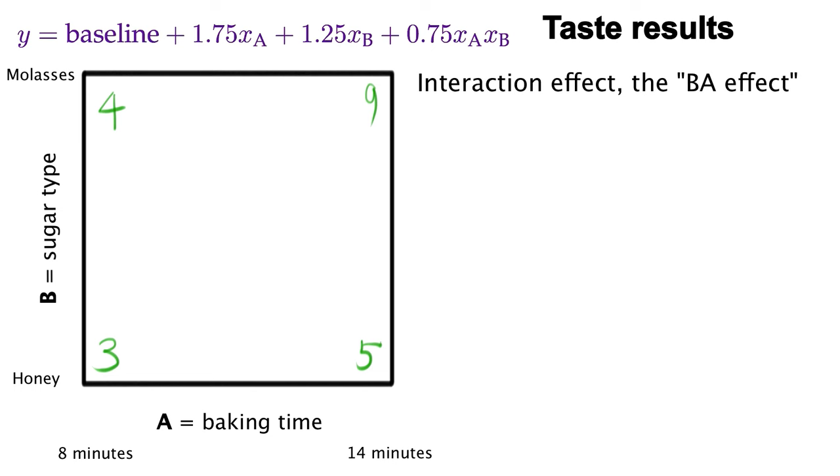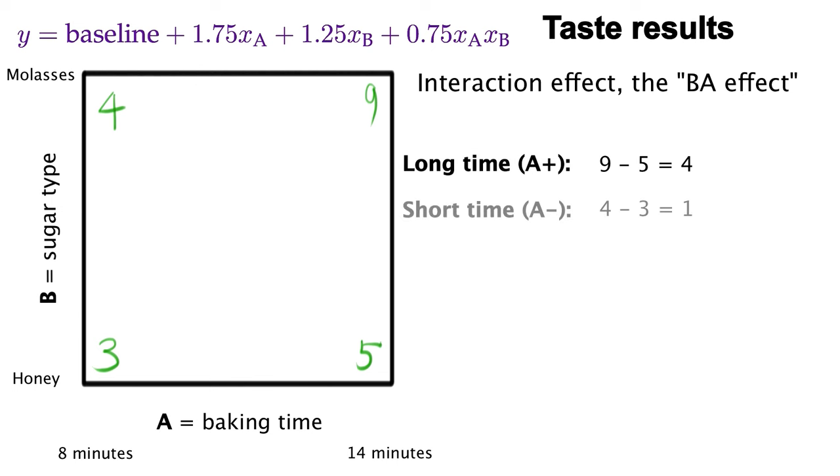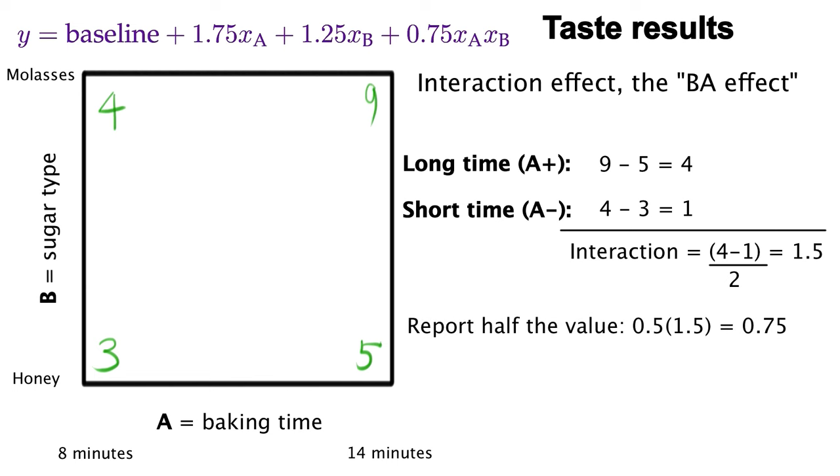Remember we said that interactions are symmetrical. So let's try it again by looking at it from the other perspective. Compare the difference for factor b at high and low levels of a this time. So the effect of sugar type at long cooking times is a difference of 4 units. That same difference when using short cooking times is only a difference of plus 1. Those two values are quite different, plus 1 and plus 4. The half difference this time is 4 minus 1 divided by 2, and that's a value of 1.5. The same value as before. Again, we report only half of this, so 0.75.